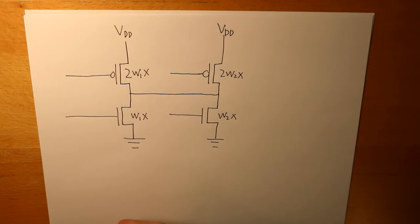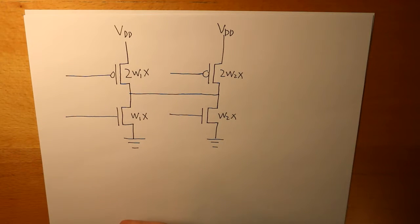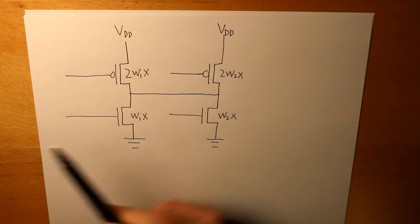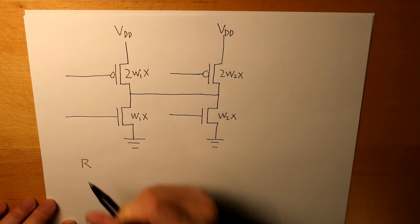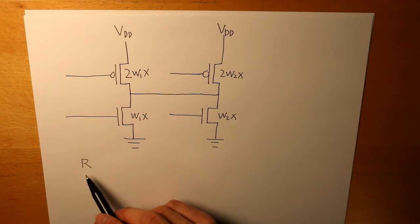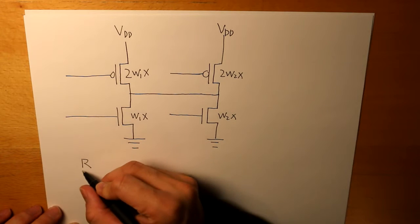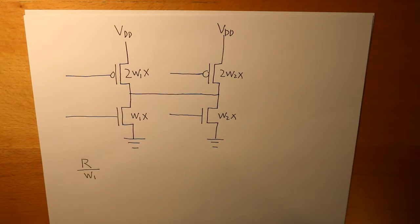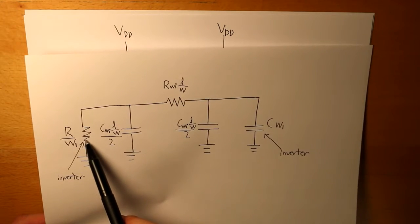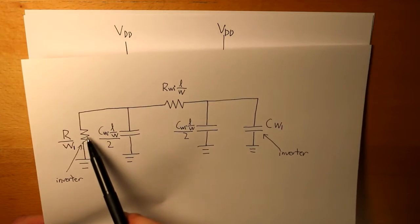To calculate resistance, we take the unit NMOS resistance — labeled R in a given question — and we simply divide it by W1. That gives us the resistance for the inverter.